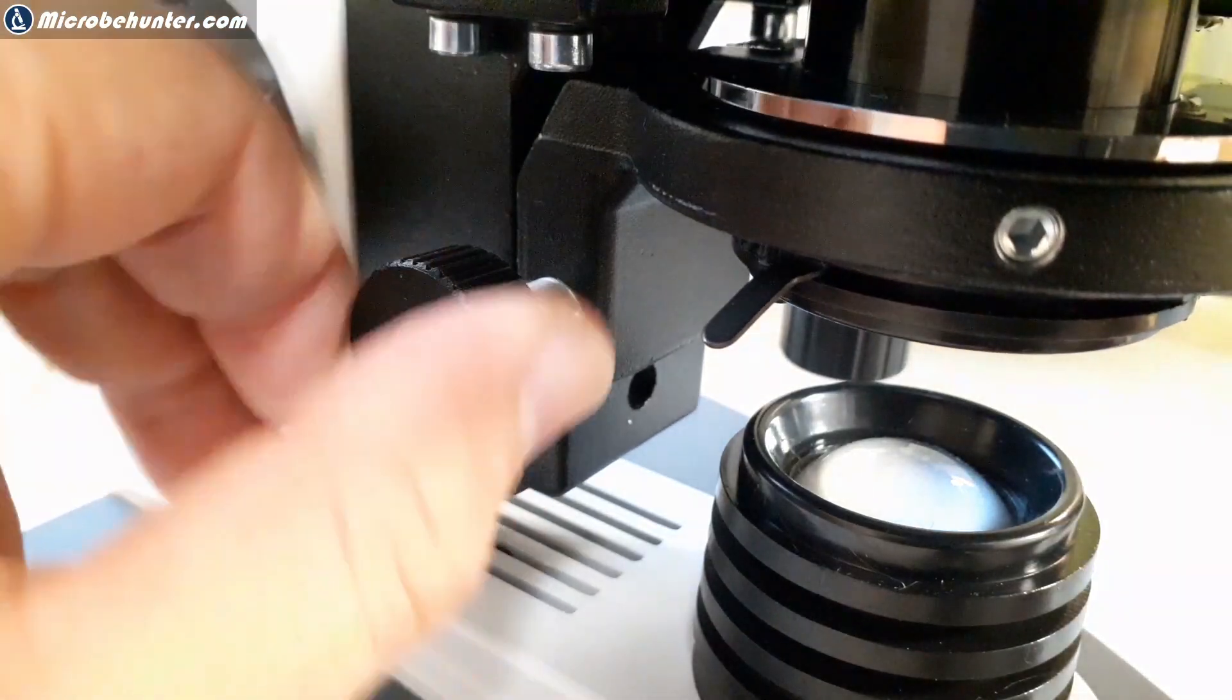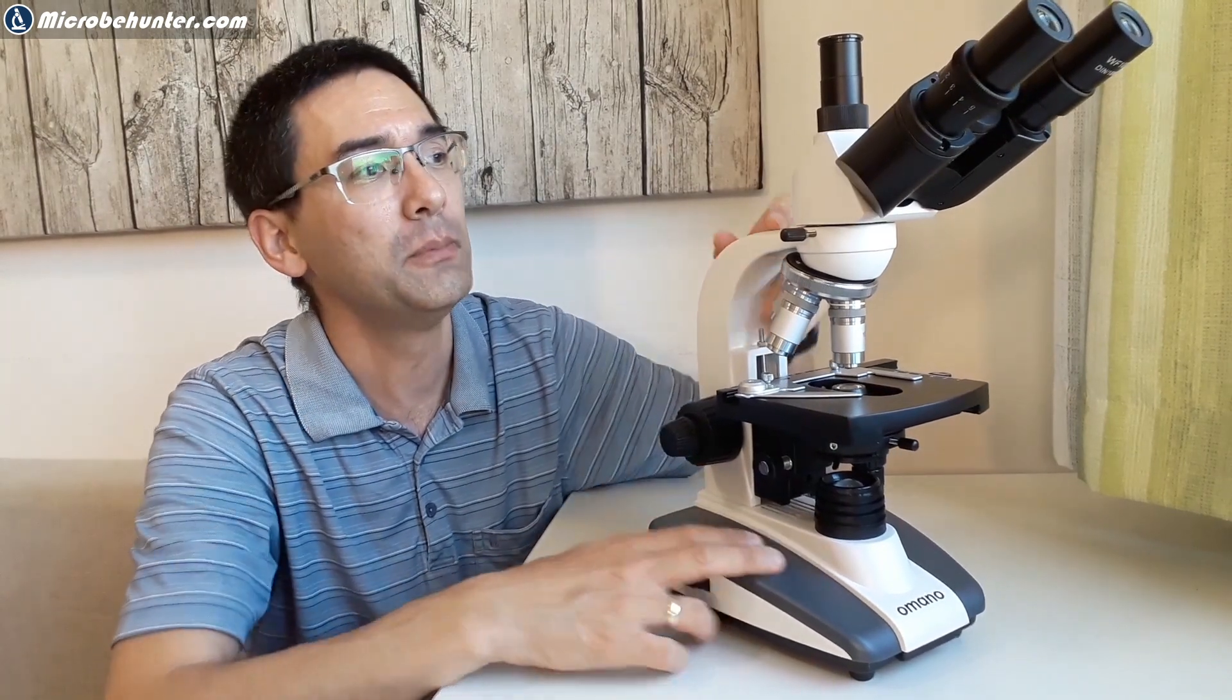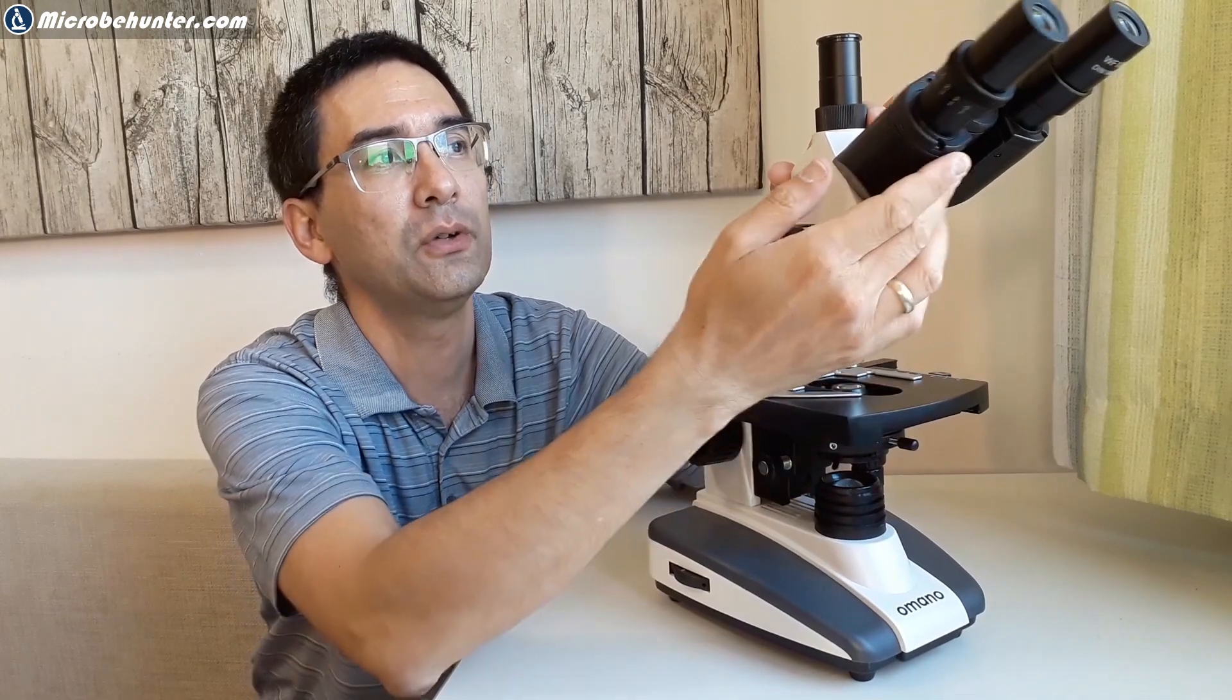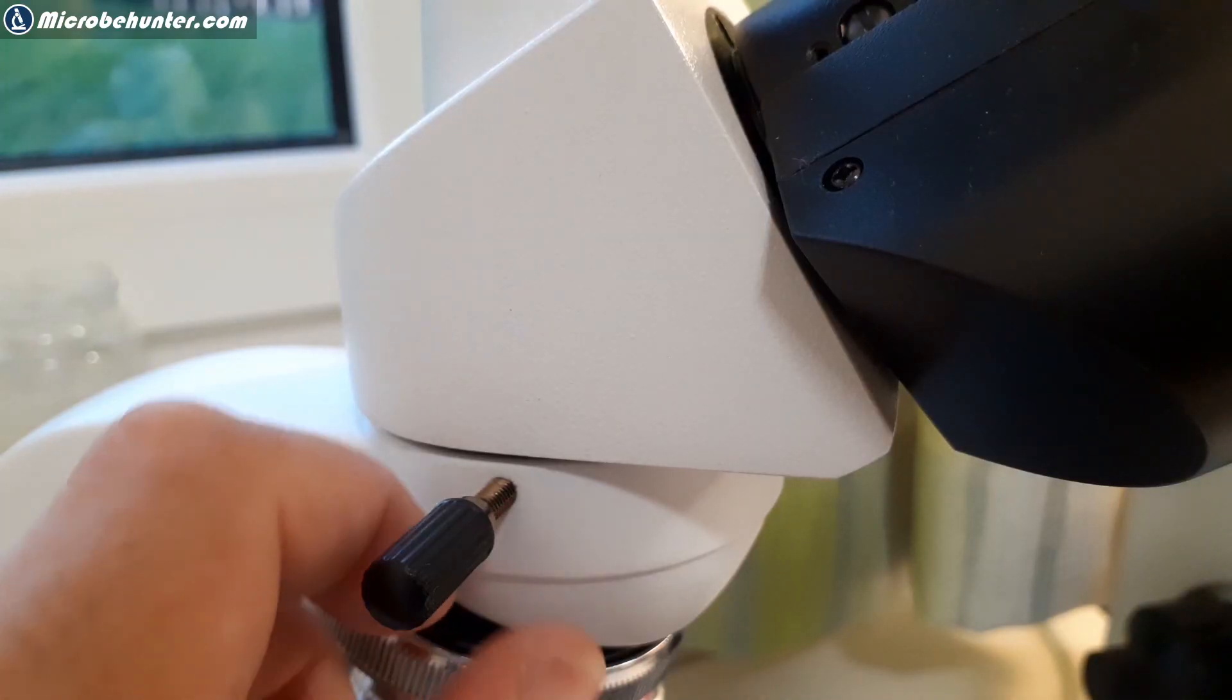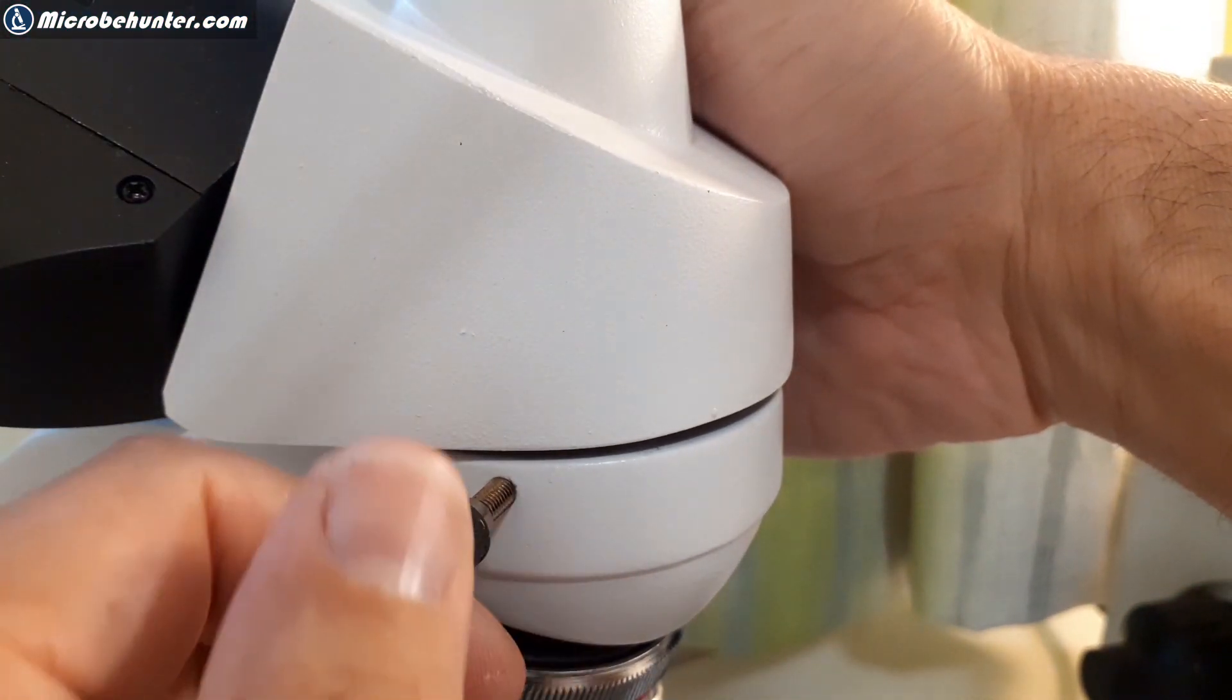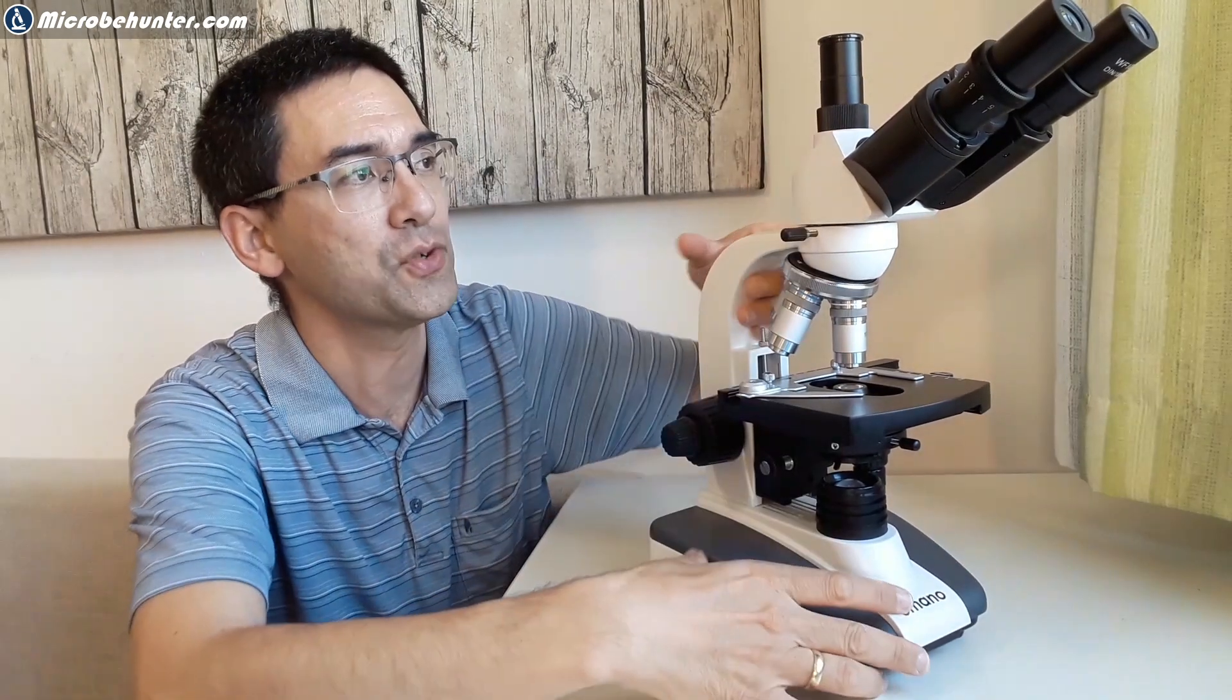That's pretty much already almost everything. There's one thing I almost forgot. If you loosen up the screw here then you can flip it around and you can use the microscope in this orientation if you want to. I usually always keep it like this. That's my preferred way of using the microscope.